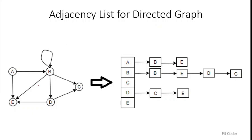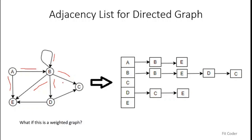For a directed graph it is quite similar — we just check the outgoing edges. The array size remains five. For A, the outgoing nodes are B and E. For B, the outgoing nodes include the self-loop and others: B, E, D, C — four nodes total. C has no outgoing node so it is empty. D's outgoing nodes are C and E, and E has no outgoing node so it is empty.